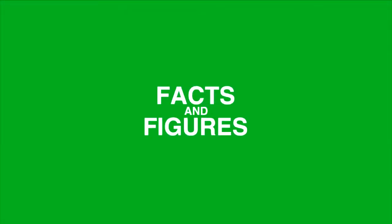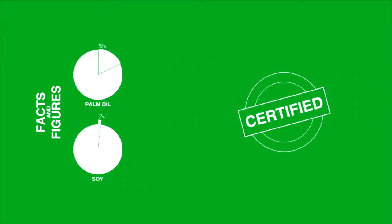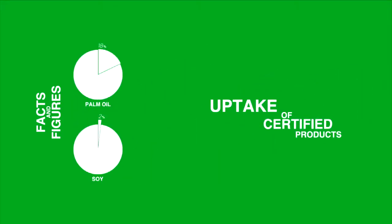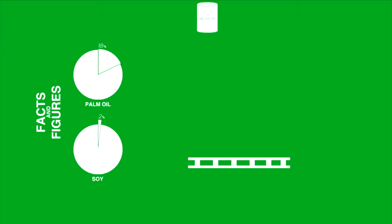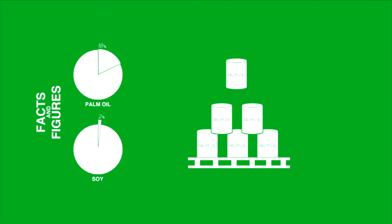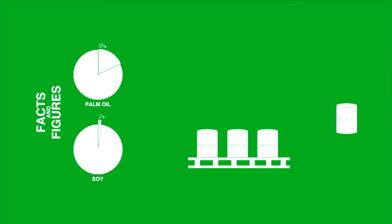Some facts and figures: in 2013, worldwide 18% of palm oil and 2% of soy were certified. The uptake of certified products remains too low. Of the certified palm oil, for example, only 50% is actually taken up by the market, clearly indicating that even at low levels of production, it exceeds demand. It is necessary to offer alternatives to these producers.